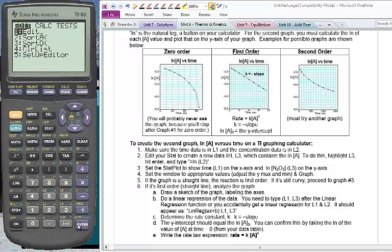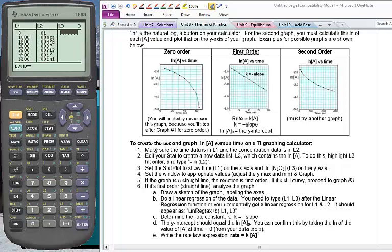So we want to make sure that our data is still there. So go back, hit stat and edit. And it looks like L1 and L2 are still right. But now we want to do time versus natural log of the concentrations. The easiest way to do that is to select L3 here and then to hit natural log of L2. So hit second 2 and hit enter. And it will automatically fill in all those numbers for you. Isn't that great?